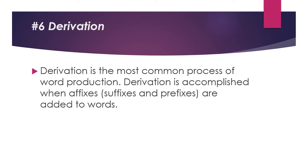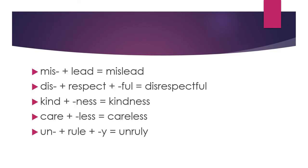Derivation is the most common process of word production. Derivation is accomplished when affixes — suffixes and prefixes — are added to words. For example: the prefix 'mis-' plus 'lead' gives misled; the prefix 'dis-' plus 'respect' plus the suffix '-ful' gives disrespectful. Also, 'kind' plus '-ness' gives kindness; 'care' plus '-less' gives careless; and for 'unruly,' we have the prefix 'un-,' the root 'rule,' and the suffix '-y.'